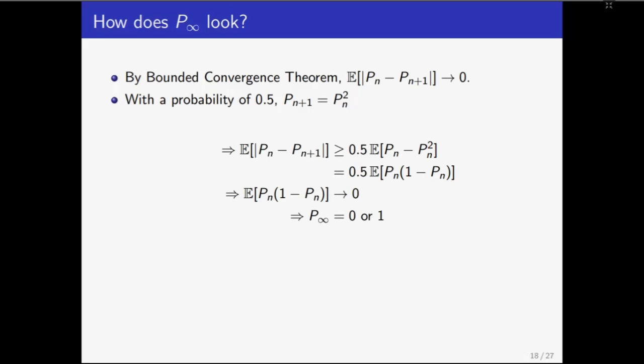Now, the expectation of a non-negative random variable is 0 only when the random variable is equal to 0 almost surely. Therefore, this means that P infinity is equal to either 0 or 1. What does this mean? This means that our new transform channels are either completely noiseless with erasure probability 0 or they are completely noisy with erasure probability 1. But what fraction of them are completely noisy? This probability can simply be written as the expected value of P infinity which is equal to P by the bounded convergence theorem.